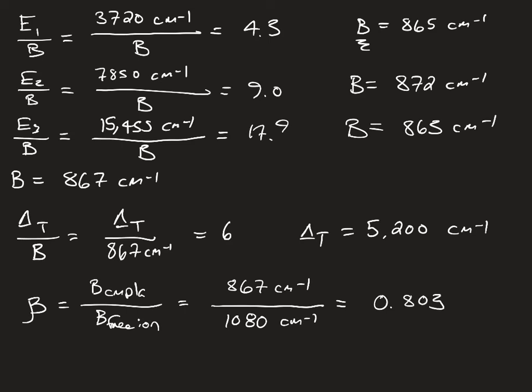Before, we've been calculating beta values that have been in the range of 50 to 60% of that of the free ion. Here, moving from OH symmetry to tetrahedral symmetry, we get something that's much closer to the free ion value. So 80% of the free ion value.